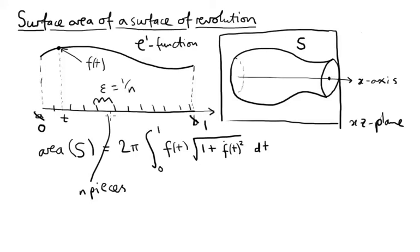So each piece has width ε, which is 1 over n. And let's label them, so these points I've drawn, I'm going to call t₀, t₁, all the way up to tₙ. So t₀ equals 0, tₙ equals 1, and I guess tₖ equals k over n. So here's tₖ, this point here.